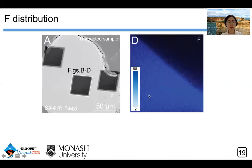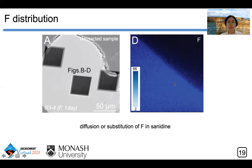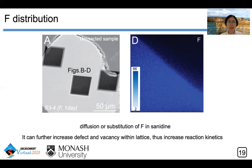An unreacted sample from sodium-fluoride solution sheds light on this reaction mechanism. Half of this unreacted sample is characterized by higher fluorine contents, indicating diffusion or substitution of fluorine into sanidine. Because of its small atomic size, this diffusion or substitution can increase defects and vacancies within the structure, providing reaction space and increasing reaction kinetics. We therefore suggest that reaction kinetics, rather than thermodynamic equilibrium, plays a more important role in the reaction mechanism.